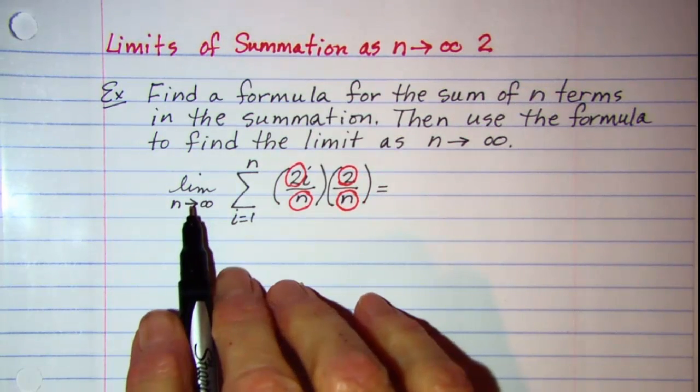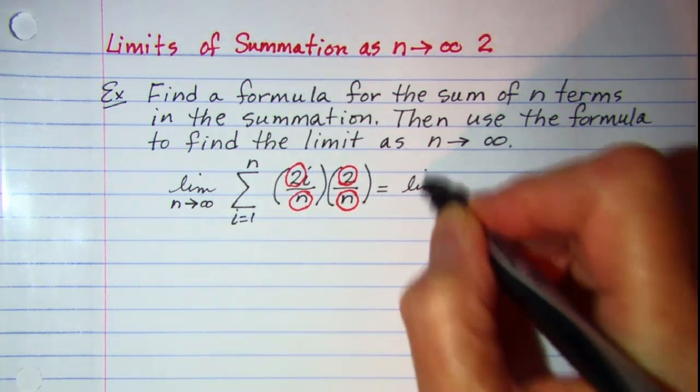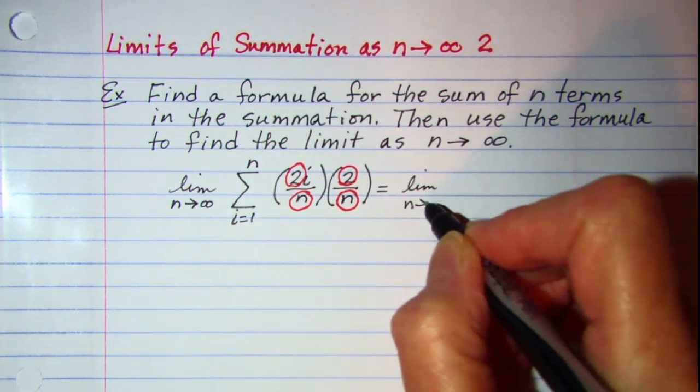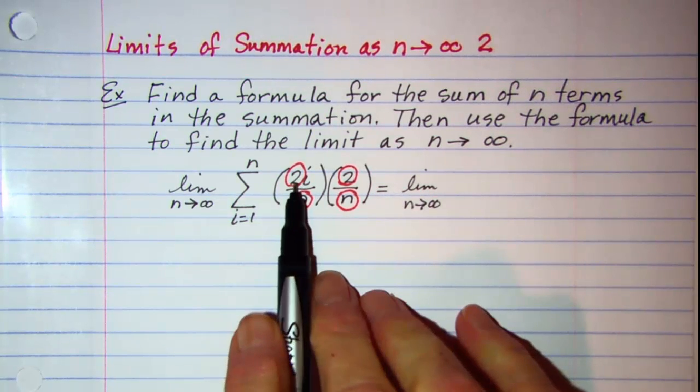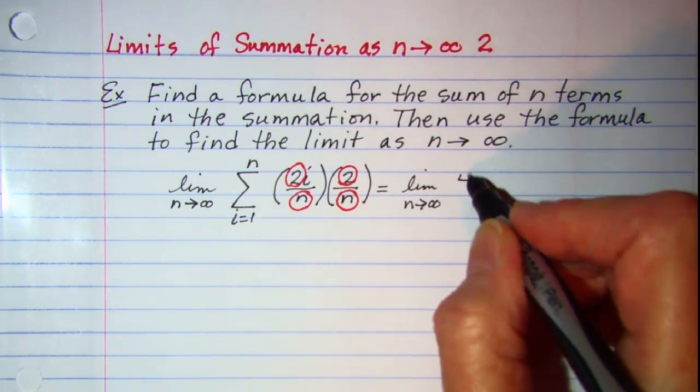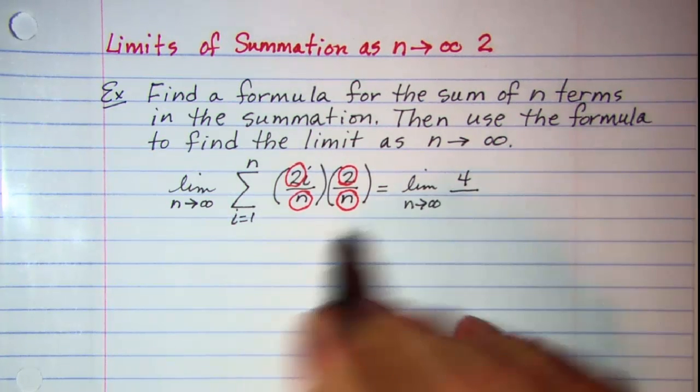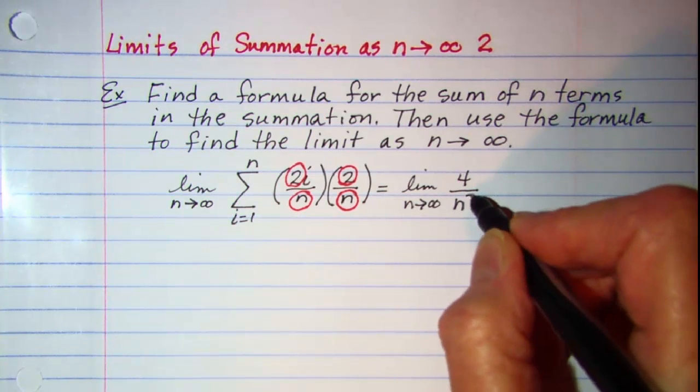Again we'll just copy this limit down until I'm ready to use it. Just ignore it. And when we pull out 2 times 2, I'll have a 4 in the numerator. And then n times n will be n squared in the denominator.